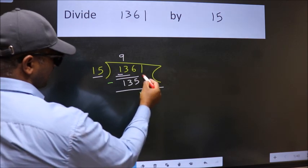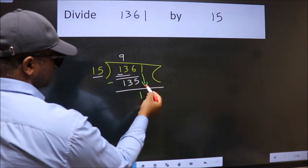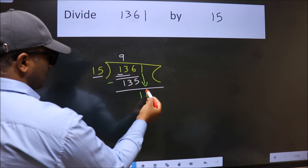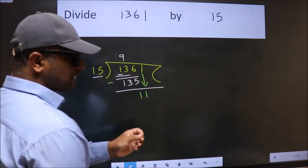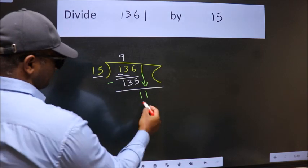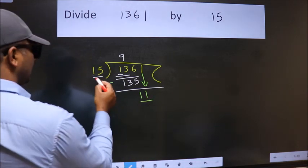After this, bring down the beside number. So 1 down. After this step, the mistake happens. And the mistake is this. Here we have 11, here 15.